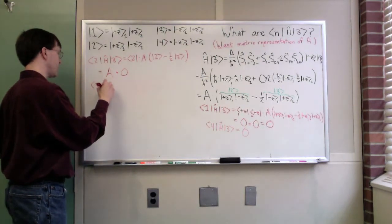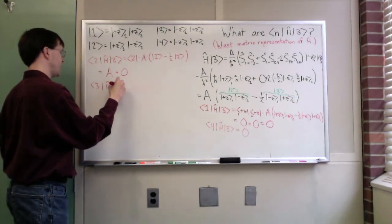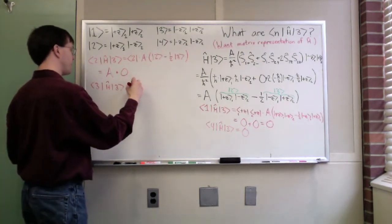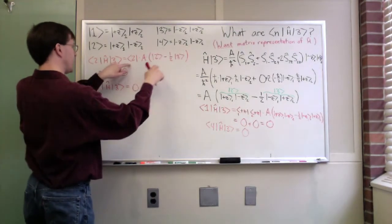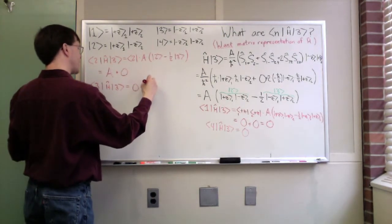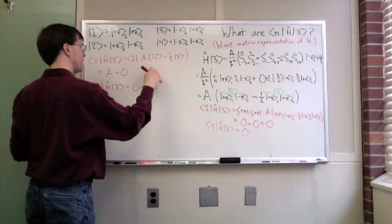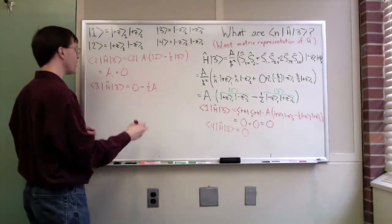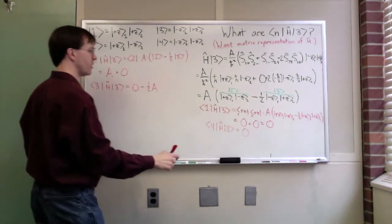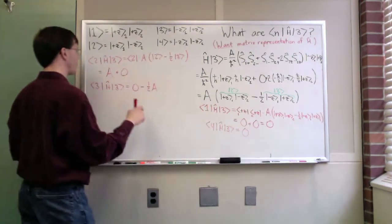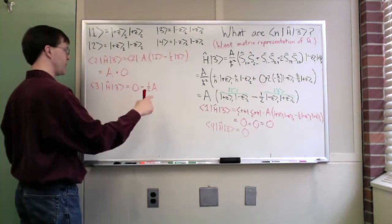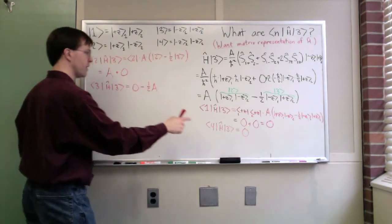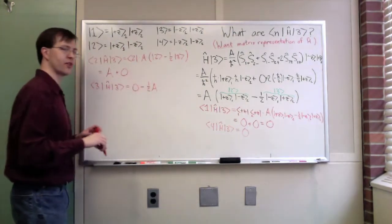Similarly, I can figure out that 3 h hat 3 is going to equal 0, because 3 with 2 is 0, minus 1/2 a, because 3 with 3 will come out to be 1. So my four things, my four entries then, are 0 for 1 h hat 3, a for 2 h hat 3, minus 1/2 a for 3 h hat 3, and 0 for 4 h hat 3.